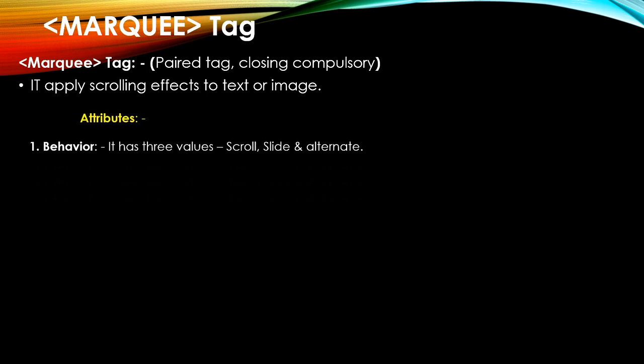The first attribute of the marquee tag is behavior — it has three values: scroll (the default), slide, and alternate. The scroll value scrolls the text continuously from the given direction. The slide value moves the text only once in the given direction. The alternate value moves the text and bounces it back within the left and right margins of the marquee box continuously.